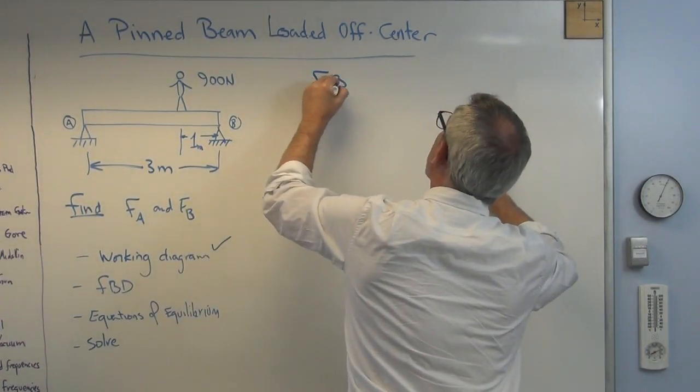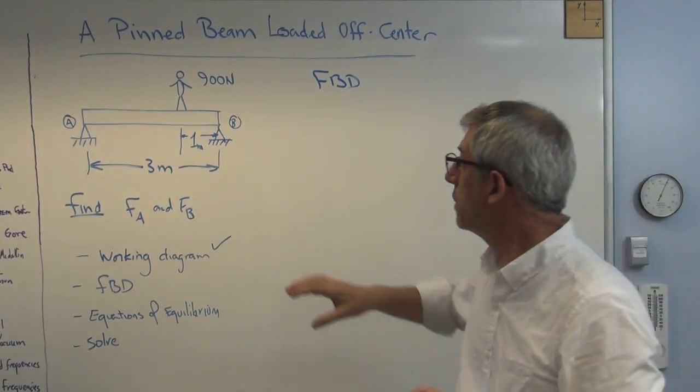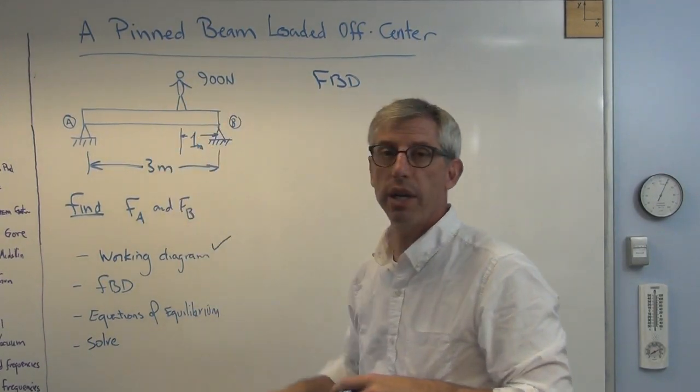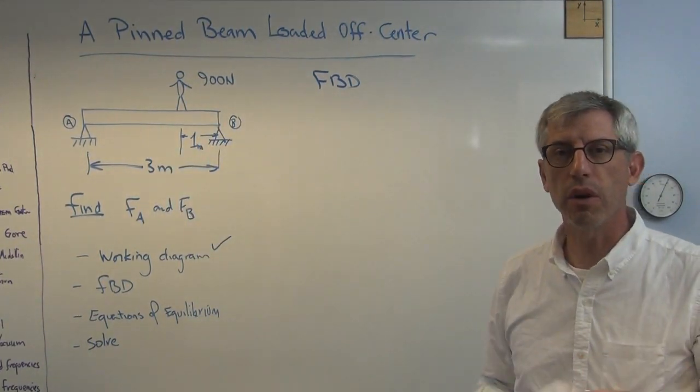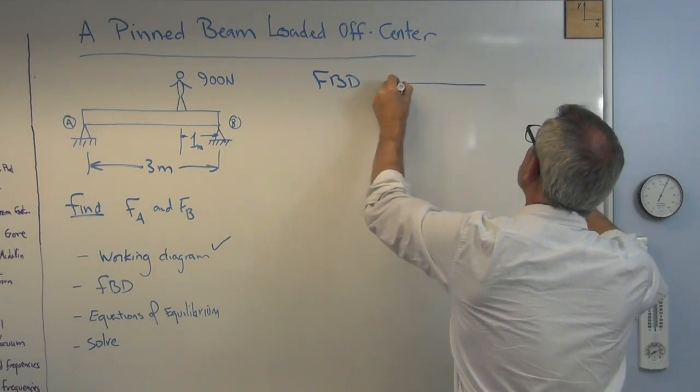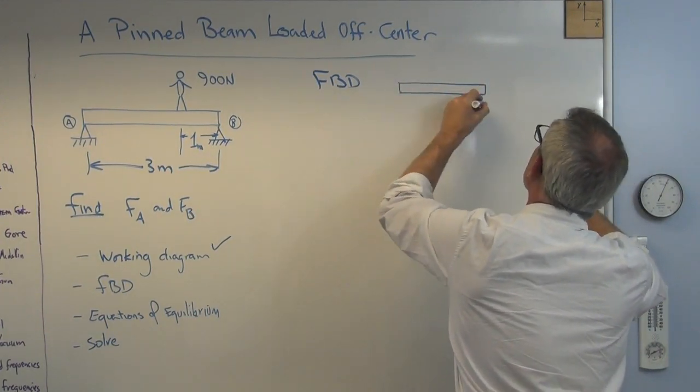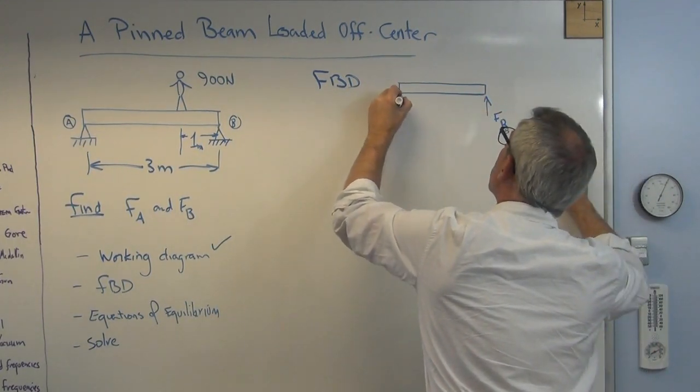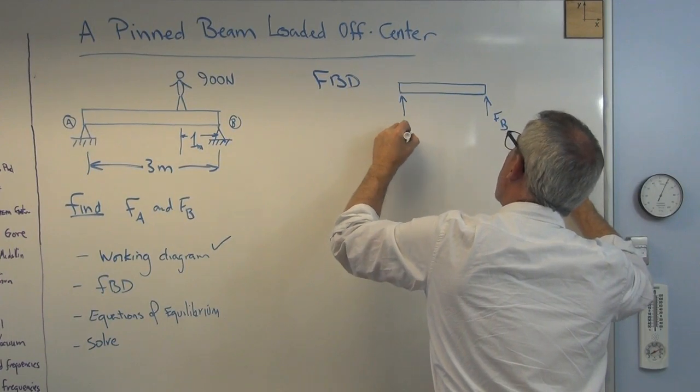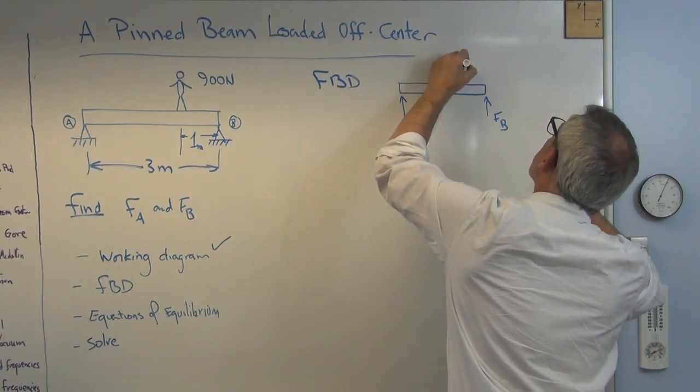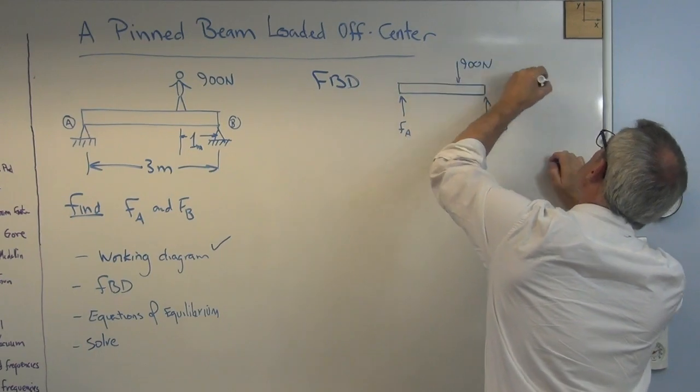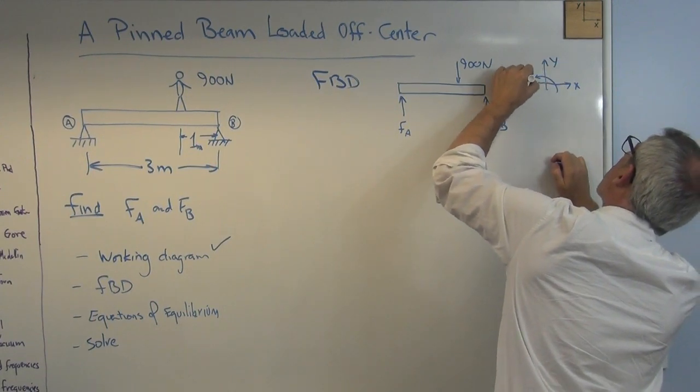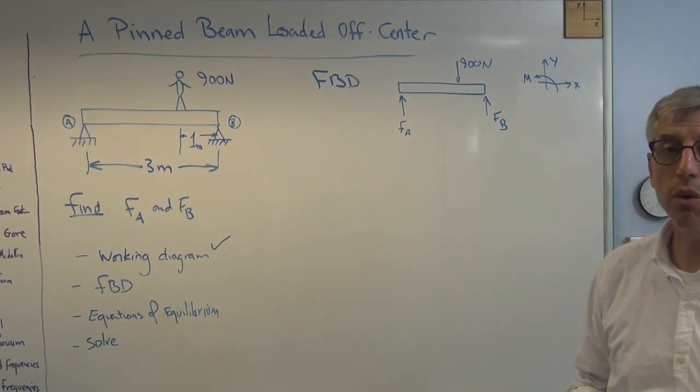So let's draw a free body diagram. Free body diagram is a simplified version of that. It's got all the parts that are necessary, but with none of the other complications. So it's a little more conceptual. So here's what we've got. This free body diagram is pretty easy. There's force up at B, force up at A, and the force down here from the load, the professor's standing on it. We've got to have a coordinate system.